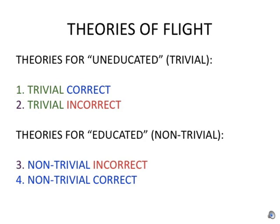For so-called educated, we have non-trivial theories which may be correct or incorrect. A trivial theory is a theory which looks like a theory but has no real content and value, like a tautology, saying nothing — as in saying it rains when raindrops are falling.